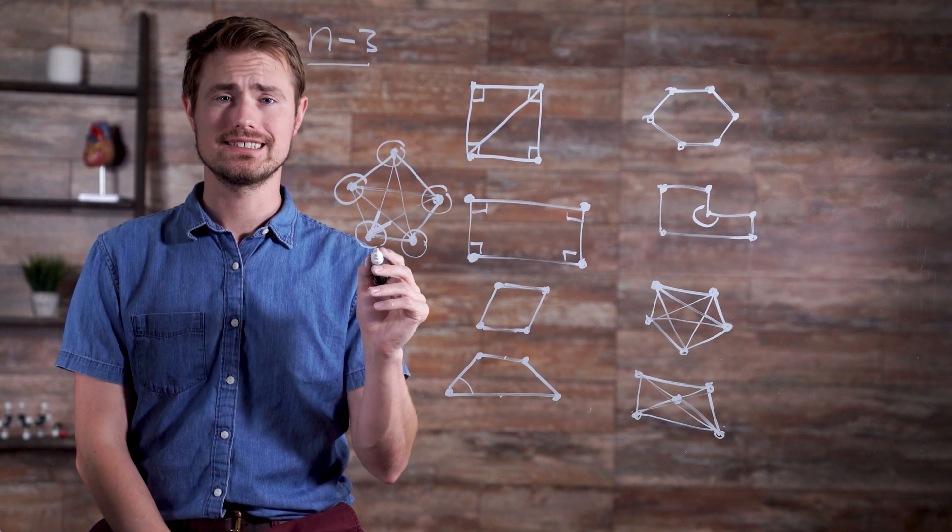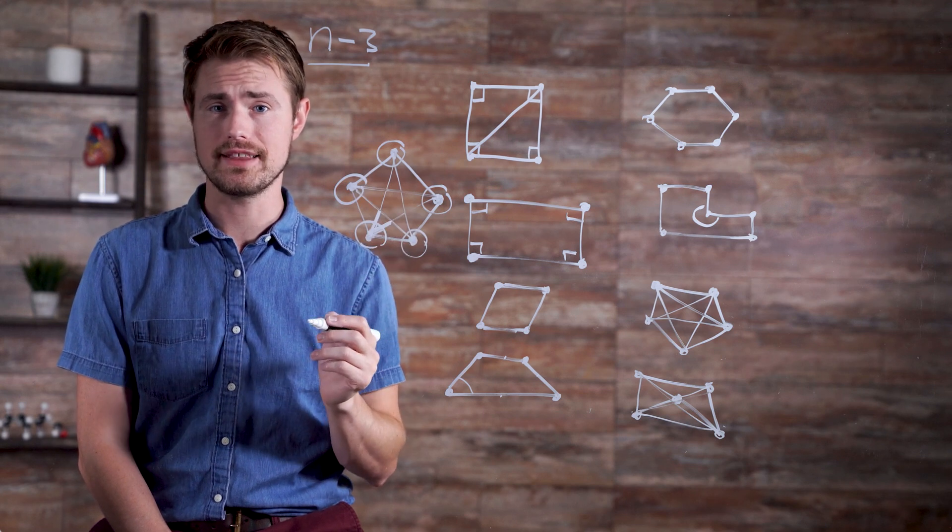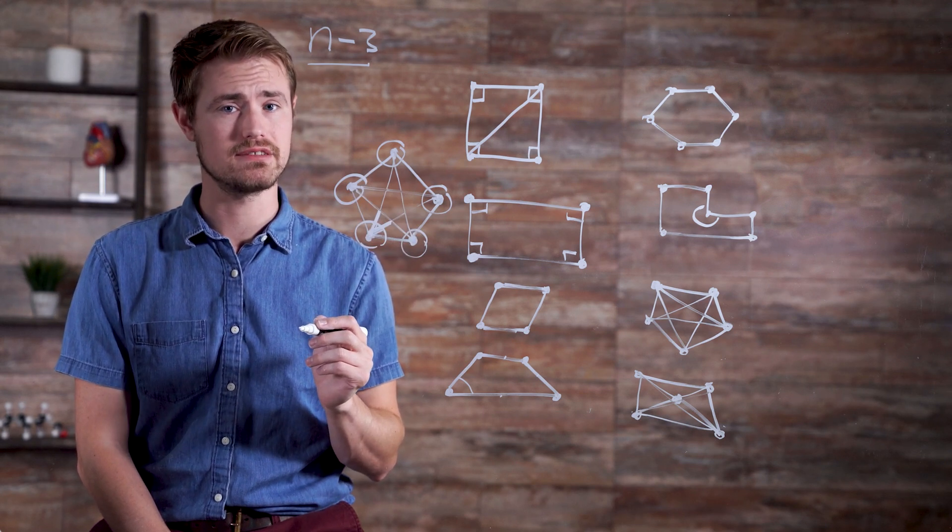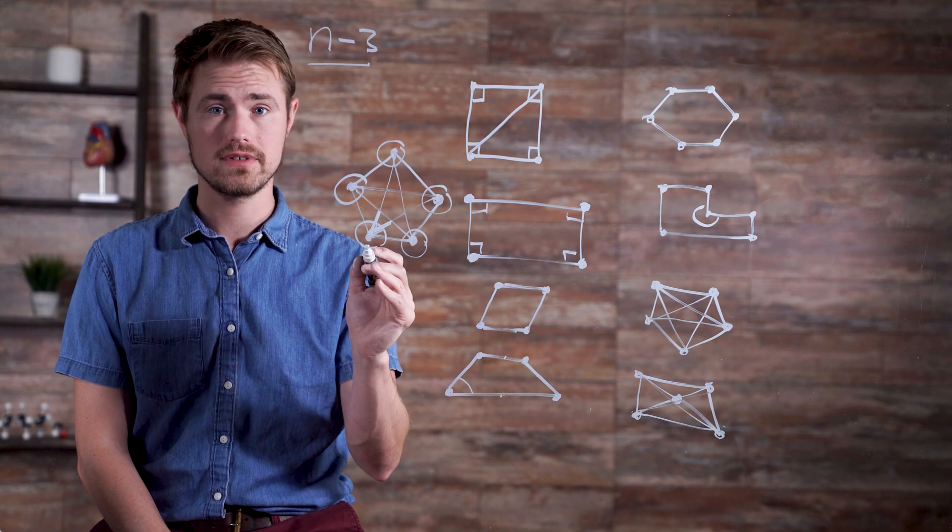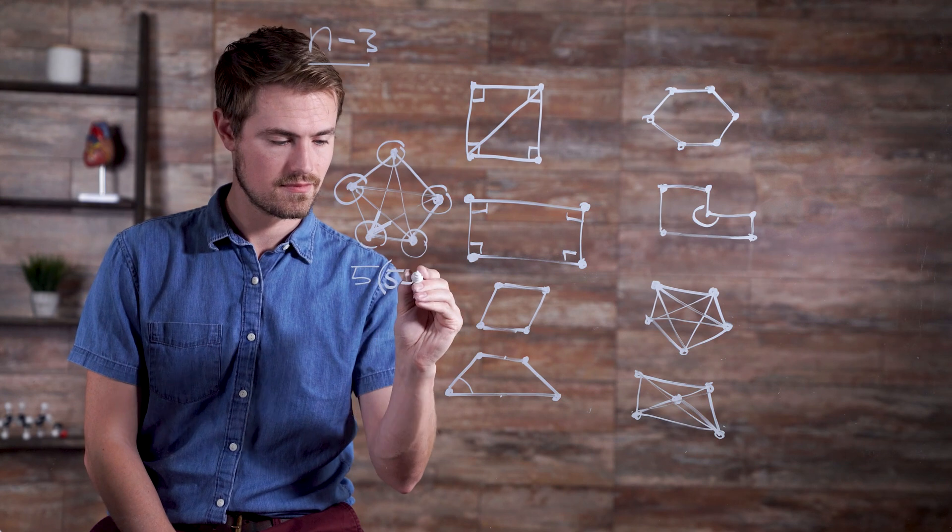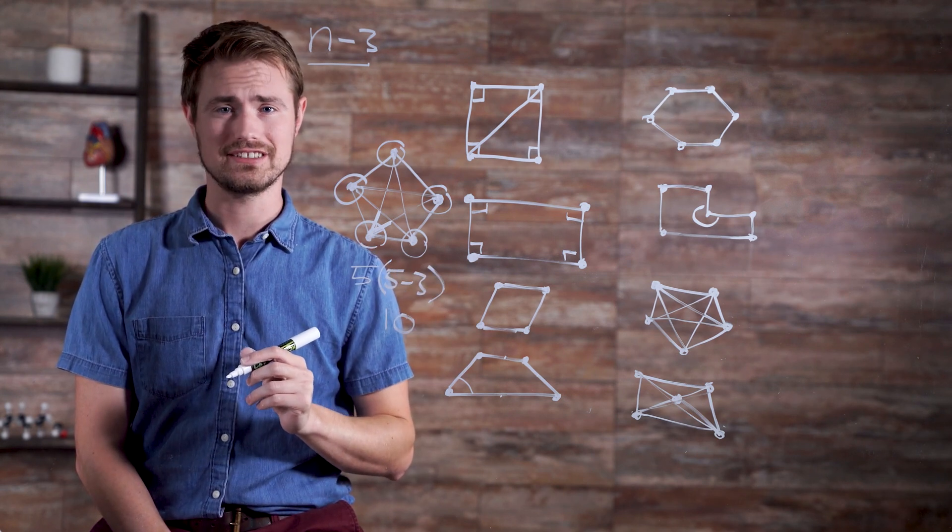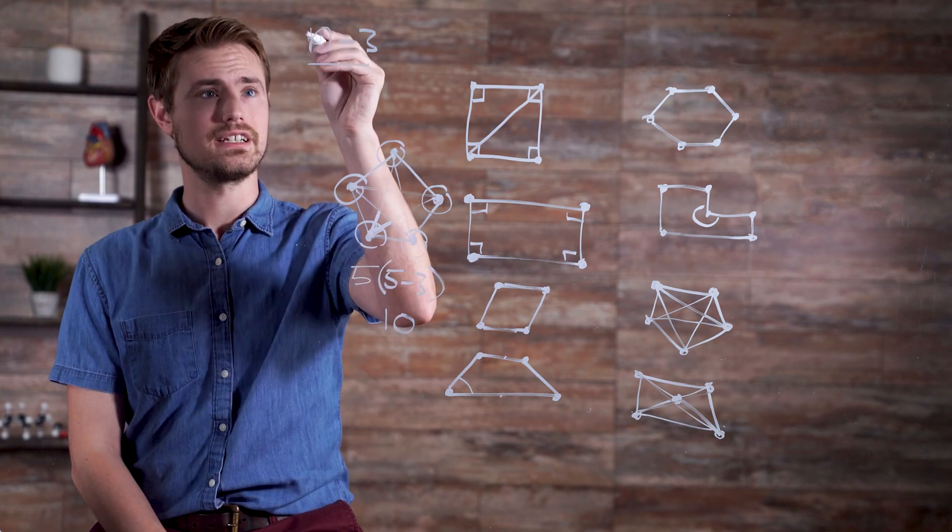Now, each vertex has the same number of diagonals connecting to it. So in this case, we can see that the total number of diagonal connections to vertices is five times five minus three, which is equal to ten. In general, we can say the total number of diagonal connections is n times n minus three.